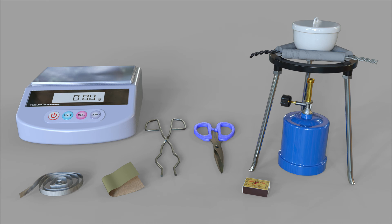Apparatus and materials needed are an electronic balance, crucible and its lid, clay triangle, tripod, Bunsen burner, matches or lighter, scissors, tongs, sandpaper, and magnesium ribbon.